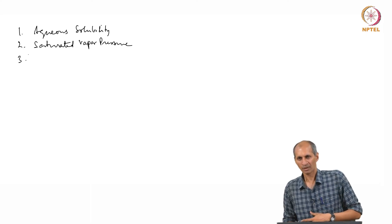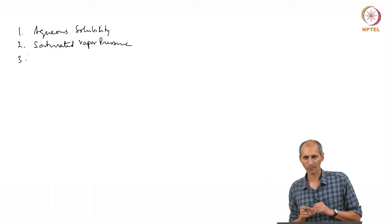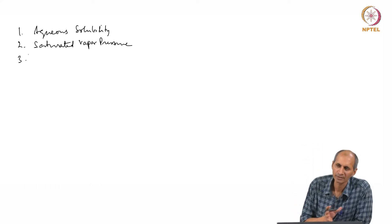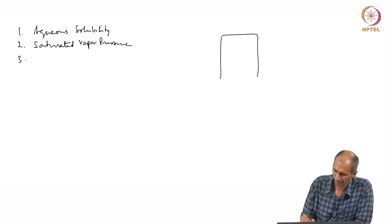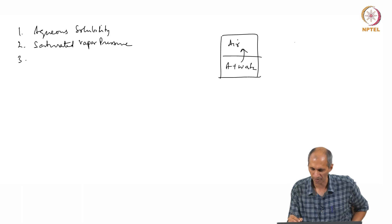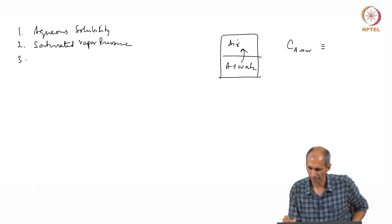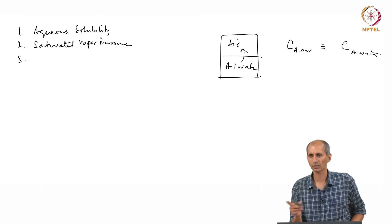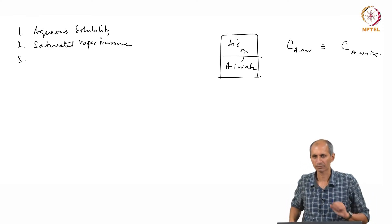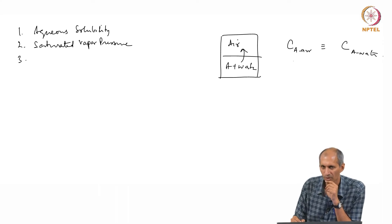What is next? If I dump a large amount of chemical into water and all of it dissolves, then it comes in contact with air — how much of it will go into air? Now we don't have a pure substance; we have a solution in contact with air. If I have a mixture of A plus water in contact with air, how much of A will go to the air at equilibrium? This is the equilibrium between the concentration of A in air versus the concentration of A in water.